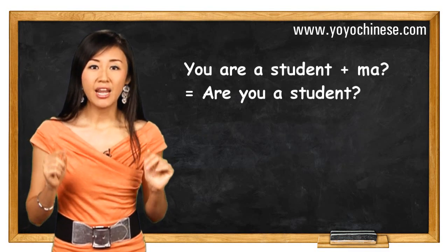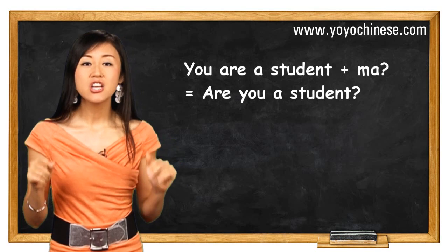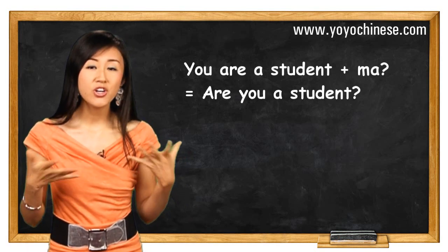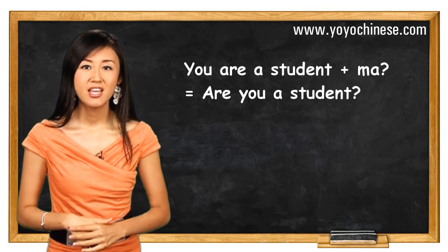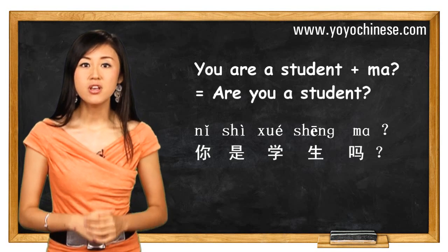Now add ma to the end of the sentence and you immediately change you are a student to a yes or no question, are you a student? 你是学生吗?